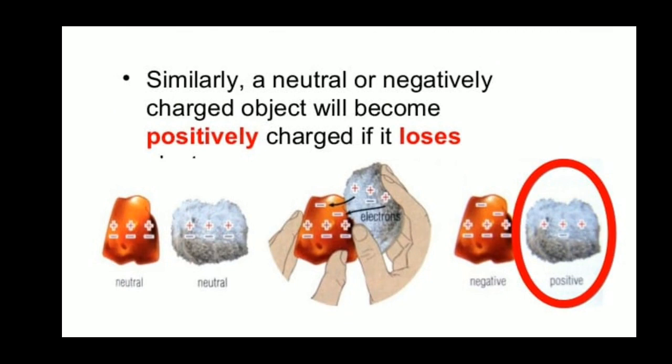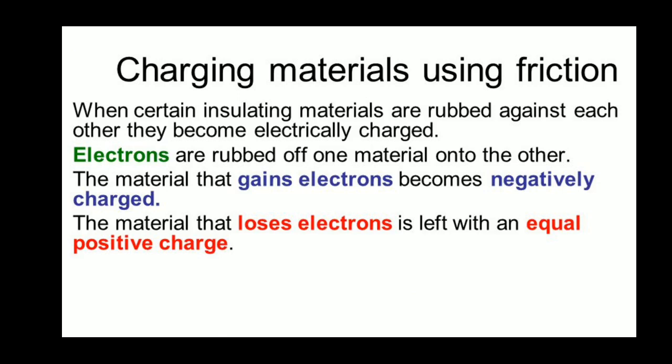Are you clear? Any charging is carried out by this method. This is about how material gets charged, either by losing electrons or by gaining electrons. If it gains electrons, it becomes negatively charged — more negative charges. If it loses electrons, it becomes positively charged. Remember: the positive charge is not at all moving; only the negative charge is moving.